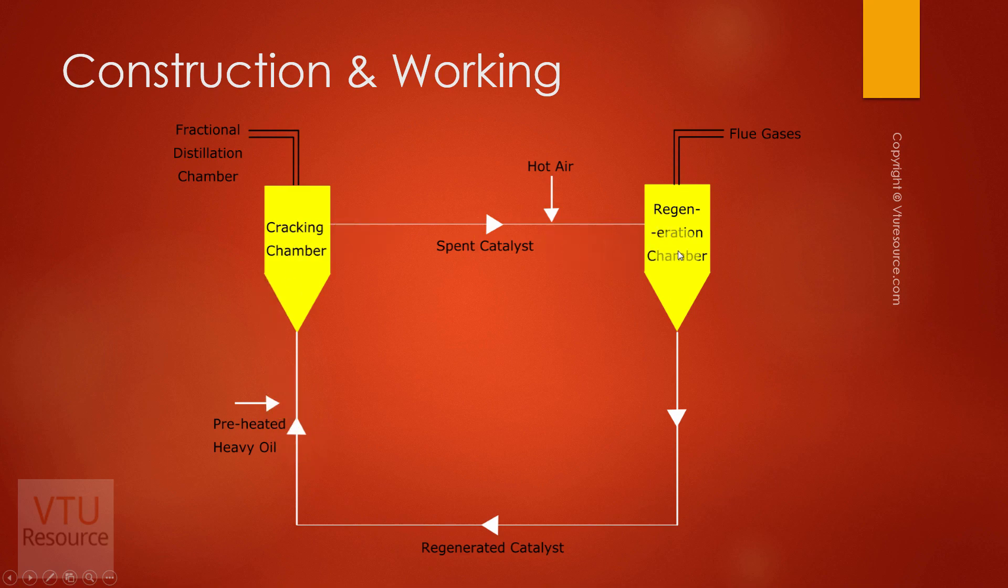The cracked vapors, which are sent into the fractional distillation column, there, depending upon the temperature, the products will be cooled, and petrol, diesel, or kerosene can be used in automobiles.